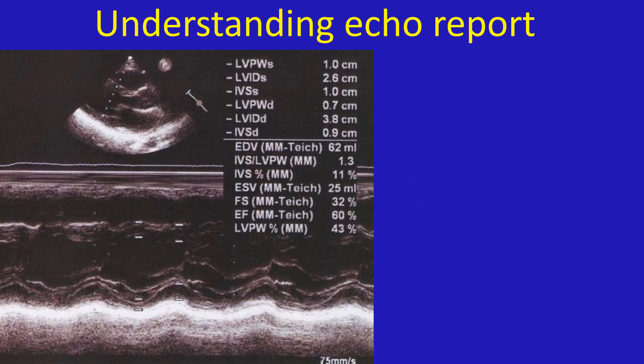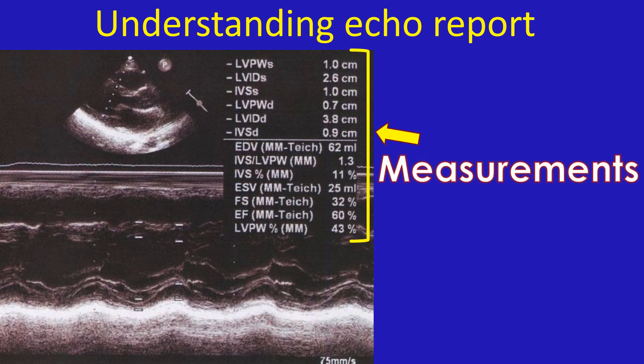Chamber sizes and measurement of thickness of chamber walls are either given as tables or the relevant picture showing the measurements printed on the report. In some reports, reference normal values are also provided. While looking at reports of children, measurements should be interpreted considering the physical size of the child, as heart chambers grow in size as the child grows.